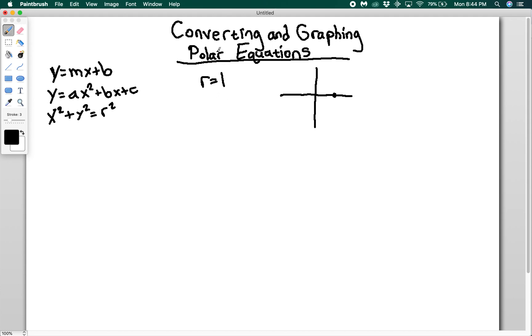So r is always going to be a distance of 1 from the pole. This is called the pole, this is called the polar axis instead of the x-axis and the y-axis, and this line here which we usually think of as the y-axis is called the theta equals pi over 2 line.